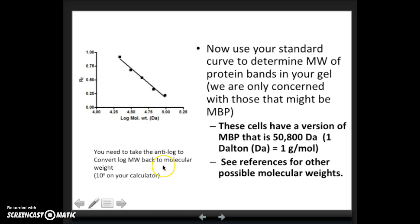But remember, we don't really want the log of the molecular weight. We want to convert back to actual molecular weights. So you need to take the anti-log to convert the log of the molecular weight back to just molecular weight. When you're writing your lab report, you don't want to talk about RF values and you don't want to talk about the log of the molecular weight. You only want to mention the actual molecular weights that you determine. And just as a reminder, that's the 10 to the X button on your calculator.